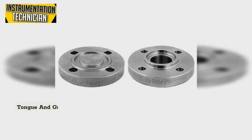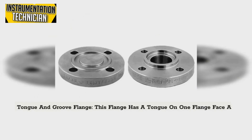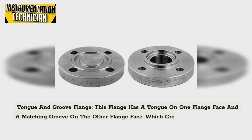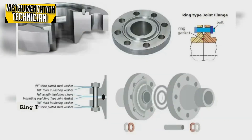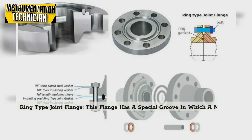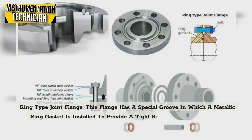Tongue and groove flange: This flange has a tongue on one flange face and a matching groove on the other flange face, which creates a tight seal when the two flanges are bolted together. Ring type joint flange: This flange has a special groove in which a metallic ring gasket is installed to provide a tight seal in high pressure and high temperature applications.